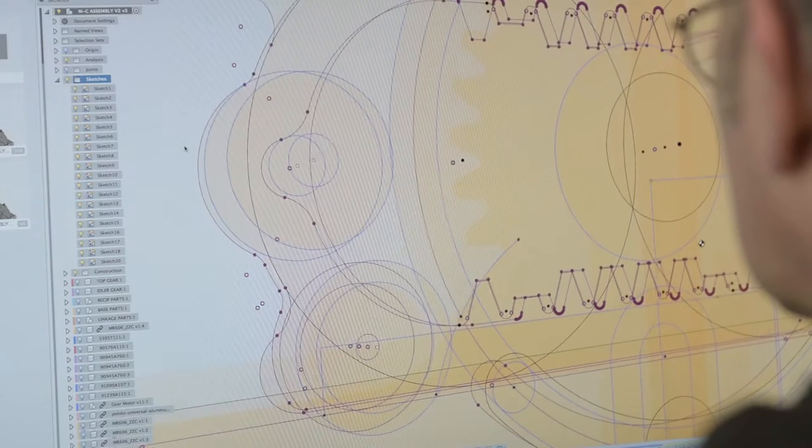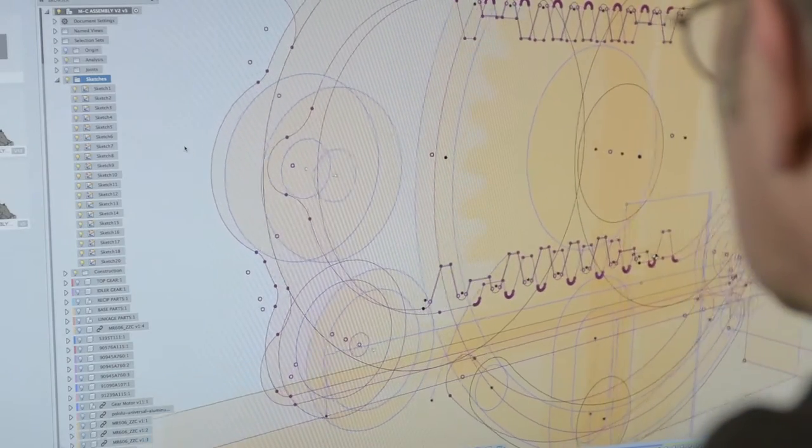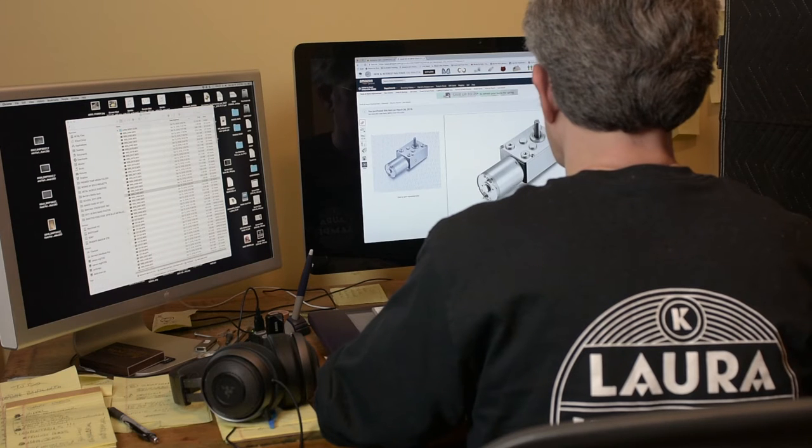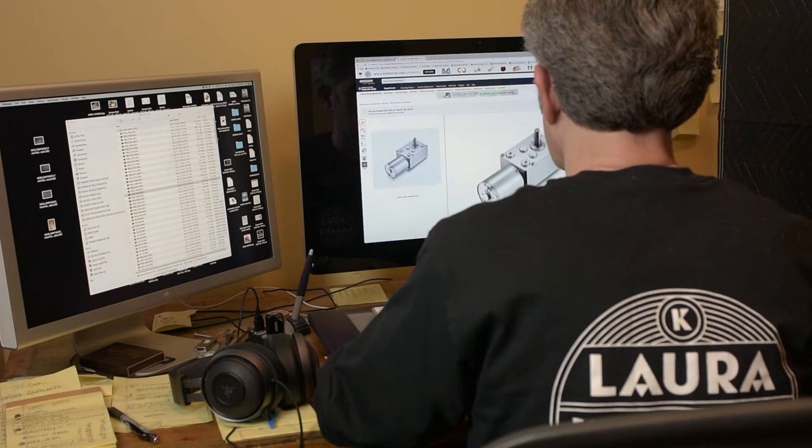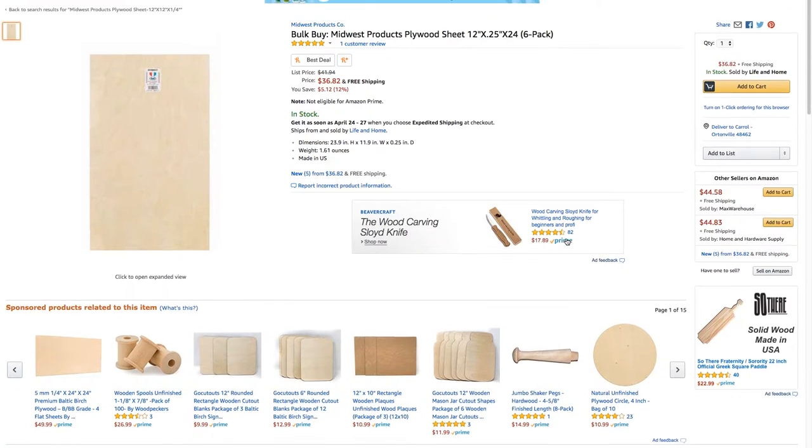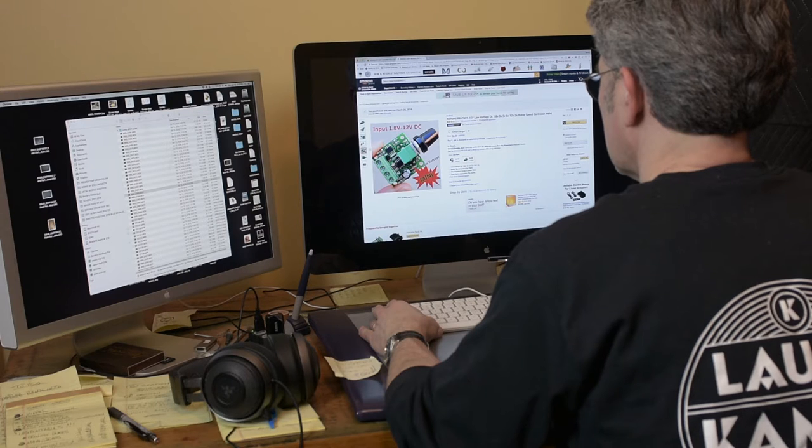I jumped into Fusion 360 and started sketching, but soon realized that I needed to go shopping before I could build a CAD model. I wanted to be sure to choose components that would be available to makers anywhere in the world. At this point in time, everything is available from Amazon.com. The links are in the description below.